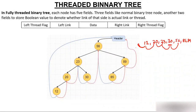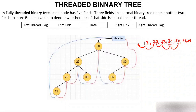To summarize: in a simple binary tree, most left and right pointers contain null values. In a threaded binary tree, instead of keeping null, those pointers keep the information of in-order predecessor or successor nodes. Such a pointer is treated as a thread, and the tree having threads is called a threaded binary tree.